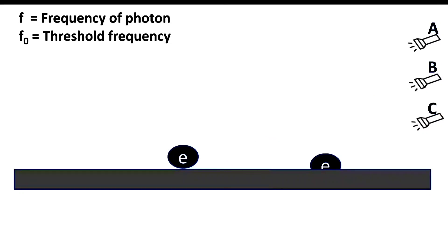The photons from source C have a frequency less than the threshold frequency. In this case, the photons are not even able to eject out the electrons.